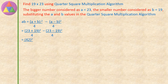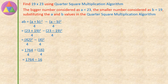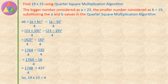23 plus 19 is 42 whole square, divided by 4, minus 23 minus 19 is 4 whole square, divided by 4. 42 square equals 1764, divided by 4. 4 square equals 16, divided by 4. 1764 minus 16, divided by 4. 1764 minus 16 equals 1748, divided by 4. 1748 divided by 4 equals 437. So 19 into 23 equals 437, using the quarter square multiplication algorithm.